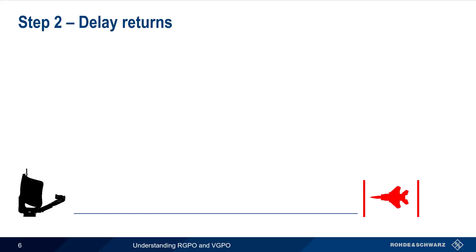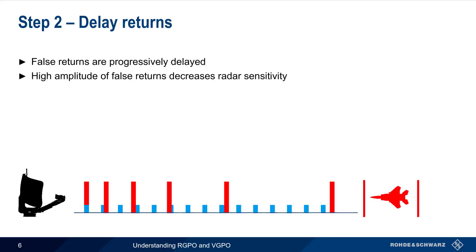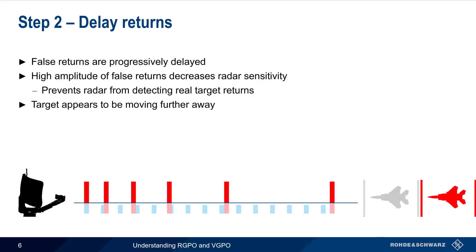The next step is delaying the returns. For a given range, all of the real returns will be equally spaced apart. But the false returns generated by the target are progressively delayed. The purpose of generating high-amplitude false returns is to decrease the sensitivity of the victim radar, which helps prevent the radar from detecting the real or skin returns coming from the target. Because the radar is now only tracking the increasingly delayed false returns, the target will appear to be moving away. This is done until the false target moves outside of the real target's range gate.